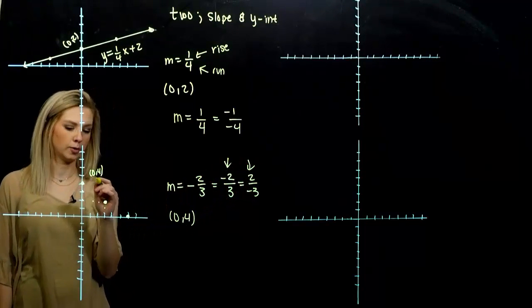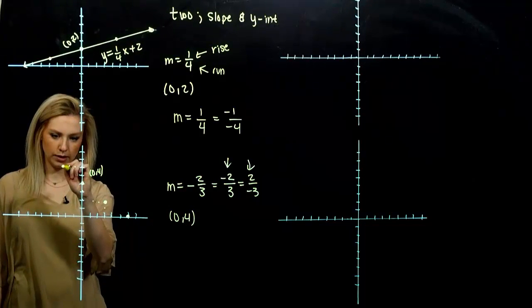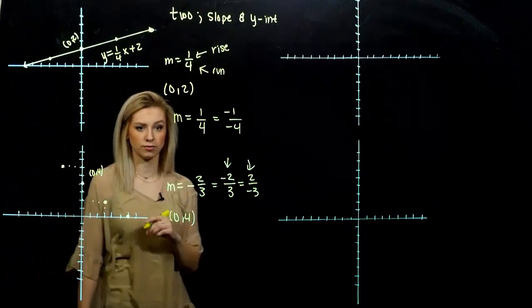What else could we have done? Other option for the slope. Rise two, fall back one, two, three. Also still falls on that line.